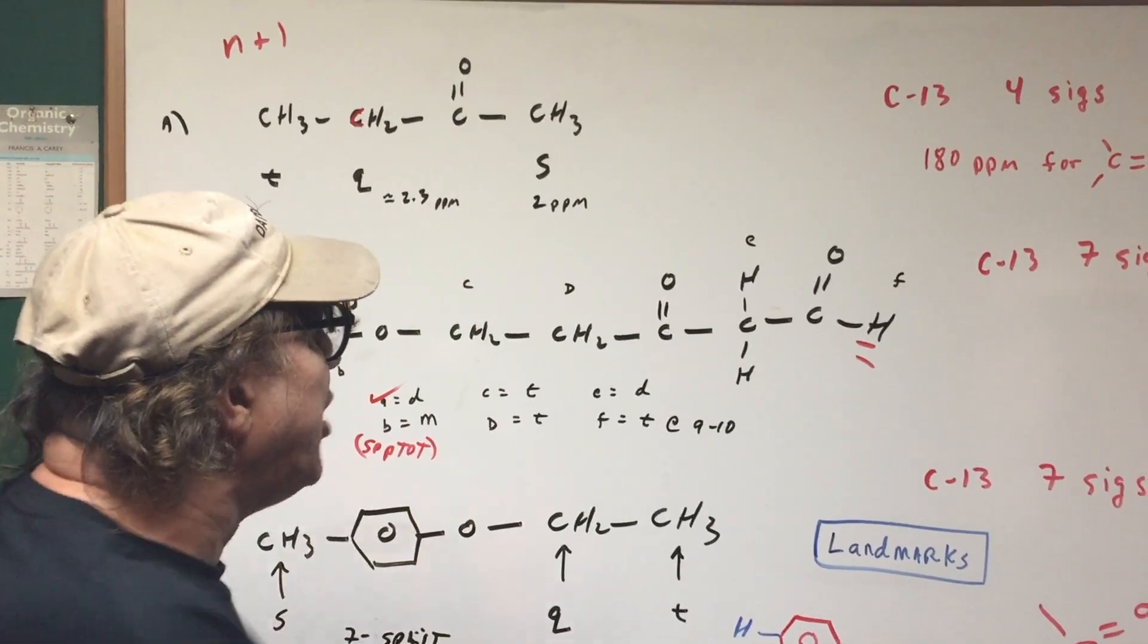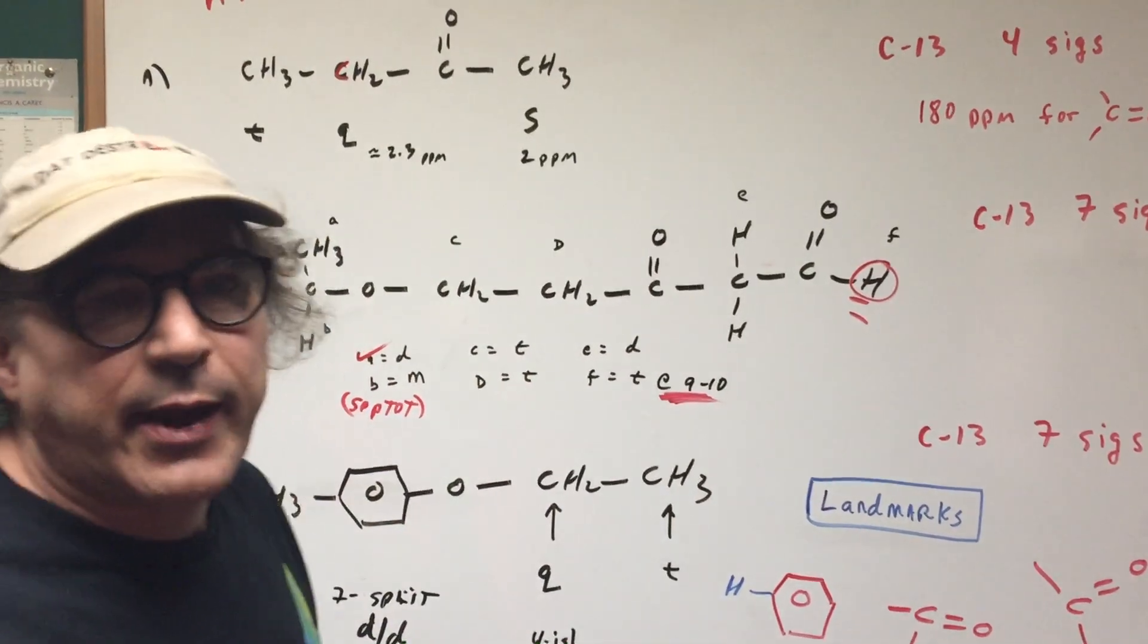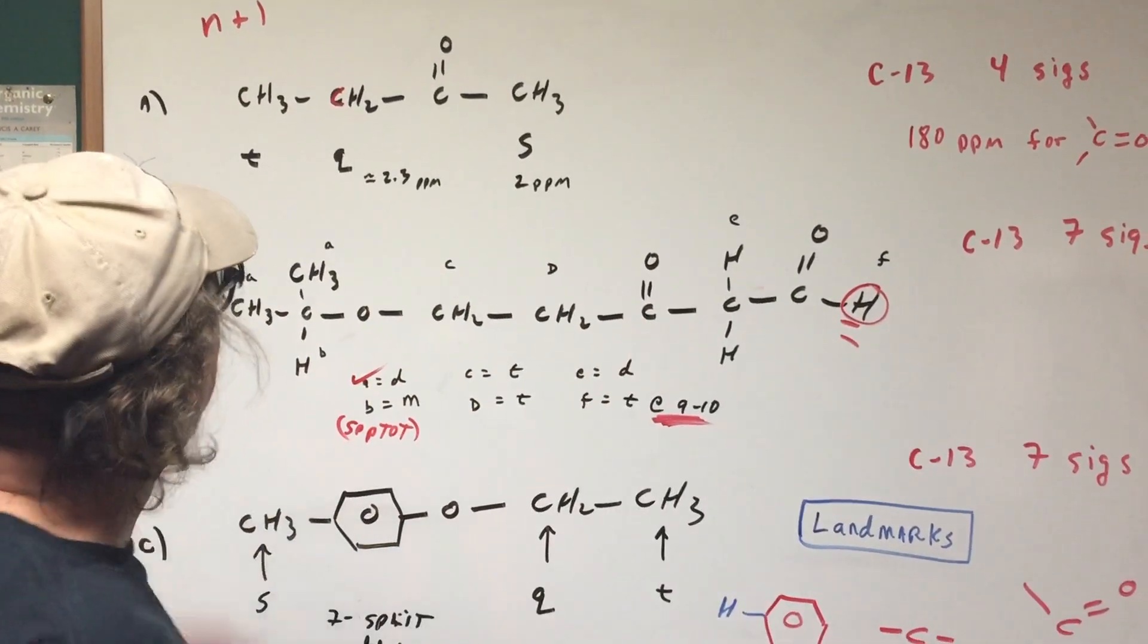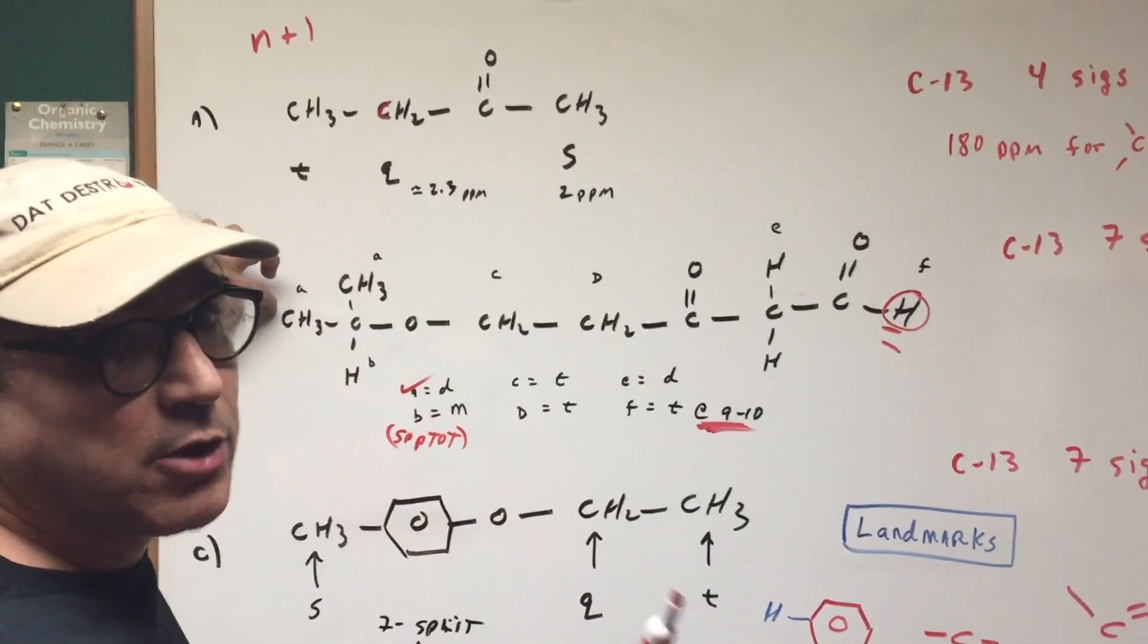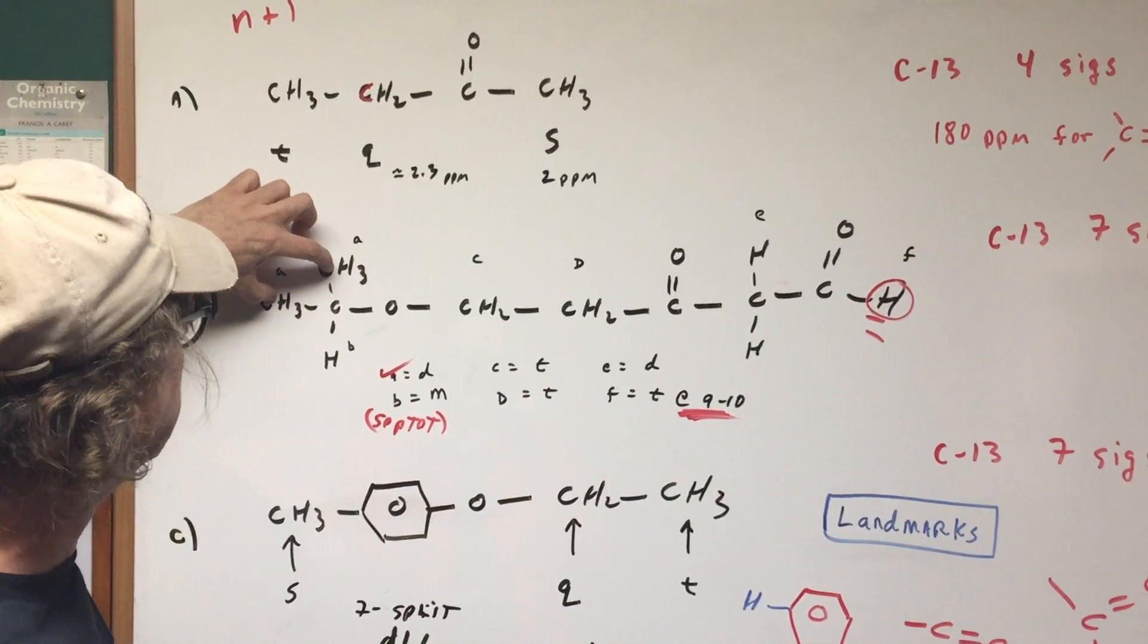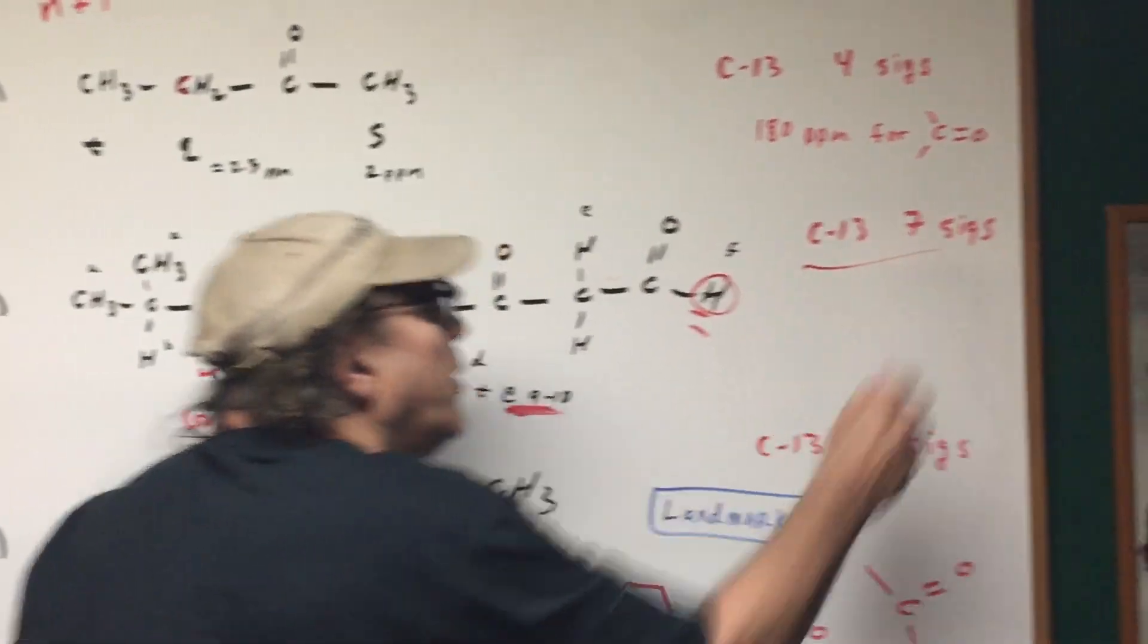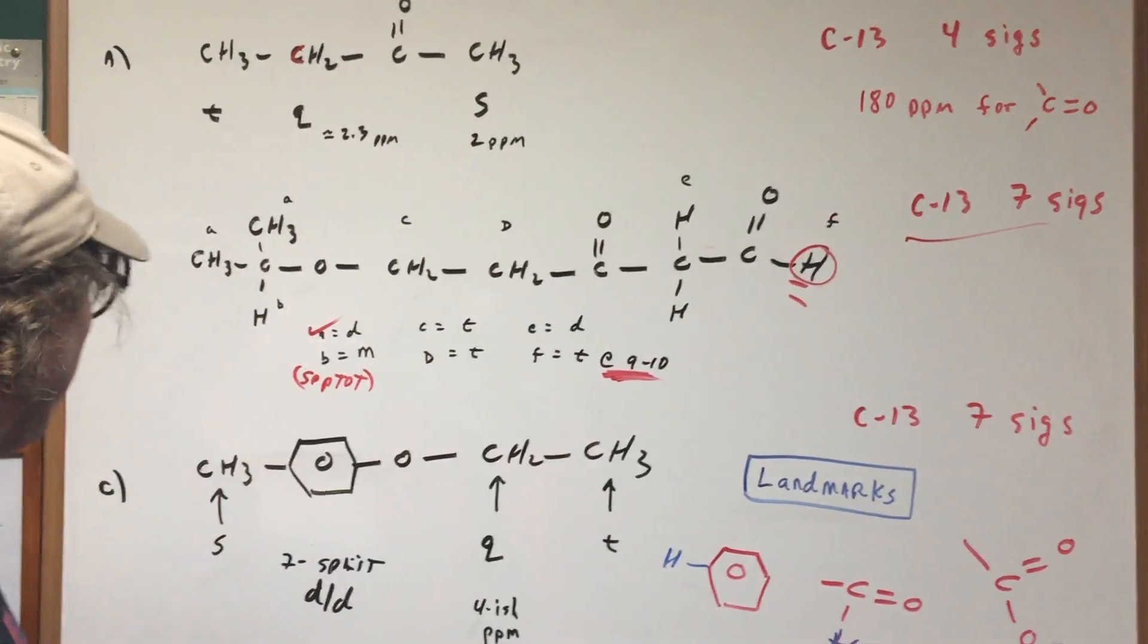The distinguishing feature here is you ever see an aldehyde proton, you would look for a signal in an NMR between nine to ten. Very important, nine to ten. If we go to the carbon-13, these two are the same. So those two carbons, now we're only looking at carbon, so be careful. There's one carbon, these are the same, two, three, four, five, six, and seven. So that would mean you would get seven signals in the carbon-13 spectra.